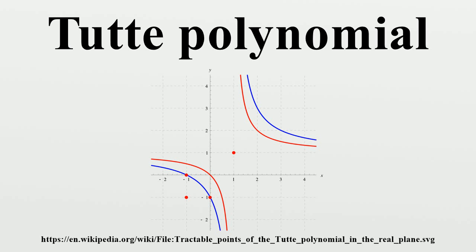Especially, T_G equals 1 if G contains no edges. The random cluster model from statistical mechanics due to Fortuin and Kasteleyn provides yet another equivalent definition. The polynomial is equivalent under the transformation. The Tutte polynomial factors into connected components: if G is the union of disjoint graphs H and K, then T_G equals T_H times T_K. If G is planar and G* denotes its dual graph, then T_G equals T_{G*} with variables swapped. Especially, the chromatic polynomial of a planar graph is the flow polynomial of its dual.